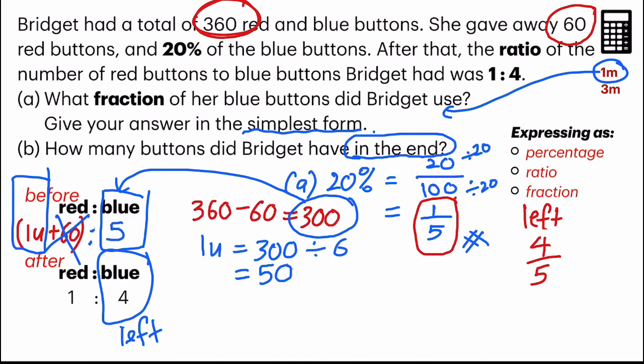And now let's go to the question, how many buttons, red and blue, did Bridget have in the end? So this is in the end after. So it's 1 and 4, which is 5 units.